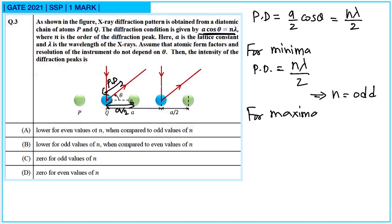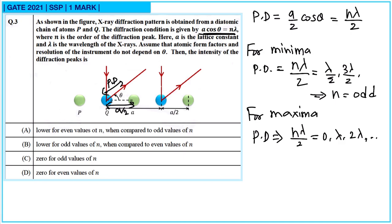For maxima, the path difference Nλ/2 must equal 0, λ, 2λ, and so on — meaning Nλ/2 equals 0, λ/2 × even multiples. So for maxima N must be even, and for minima N must be odd. Therefore intensity will be lower for odd values of N compared to even values of N, and option B is correct.